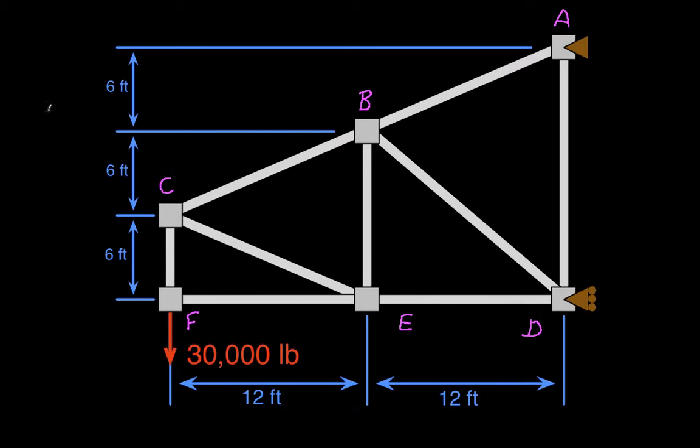And we also want to number each of the members just to make it easy to keep track of what we're computing. So we'll have this be number 1, 2, 3, 4, 5, 6, 7, 8, and 9. Okay, so we've got our truss labeled, the members numbered. Let's go ahead and solve the problem.